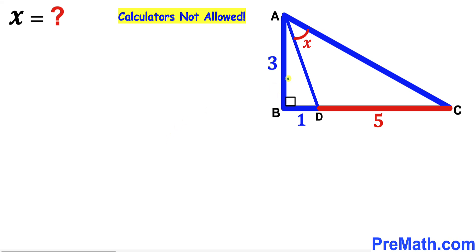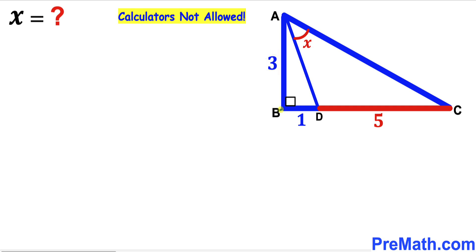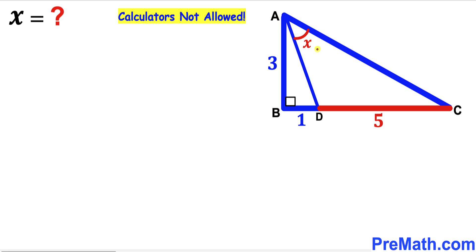Welcome to PreMath. In this video we have got this big right triangle ABC along with this segment AD, and as a result we get this angle DAC represented by X. This side AB is 3 units, segment BD is 1 unit, and segment CD is 5 units. Our task is to find the value of angle X without using calculators.